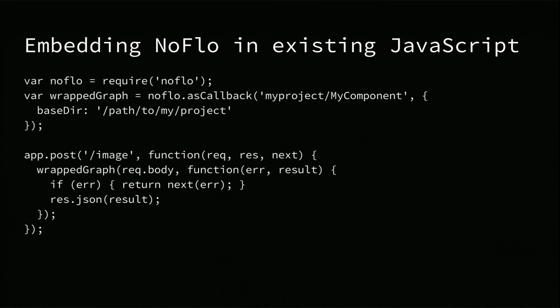A third way to use NoFlow is embedding it in an existing codebase. You probably have hairy bits you want to tackle first. For this, NoFlow's latest releases have an asCallback interface: give it a graph or textual component, and it returns a regular function you can call. For example, in an Express app, whenever someone POSTs to an endpoint, you run the NoFlow graph with the request and get results out — a very easy way to integrate NoFlow without rewriting everything at once.